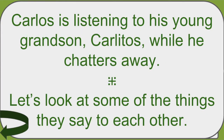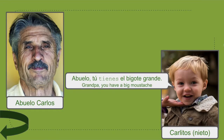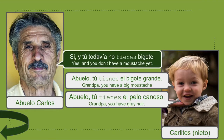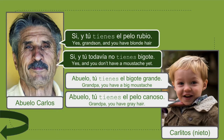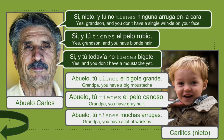In this scenario, Carlos is listening to his young grandson Carlitos while he chatters away. Carlitos says: Abuelo, tú tienes el bigote grande. Abuelo says: Sí, y tú todavía no tienes bigote. Carlitos: Abuelo, tú tienes el pelo canoso. Abuelo, tú tienes muchas arrugas. Abuelo replies: Sí, nieto, y tú no tienes ninguna arruga en la cara. Those are some sentences constructed with tienes.